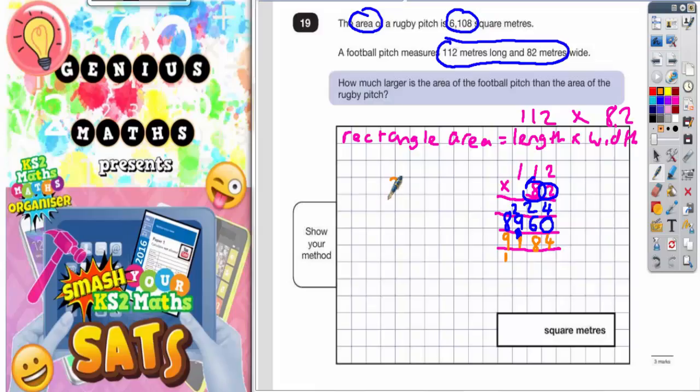So the football pitch must have an area of 9,184 square meters.